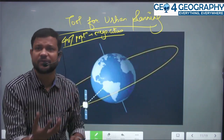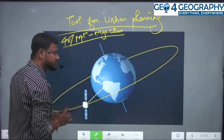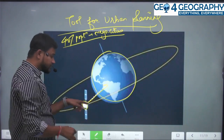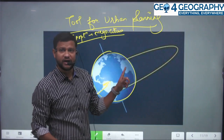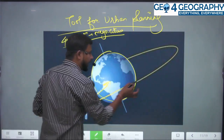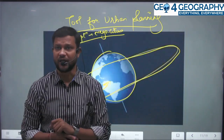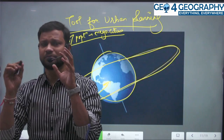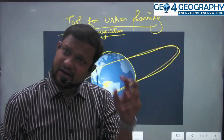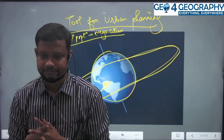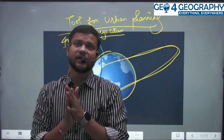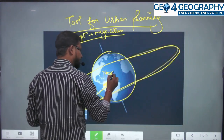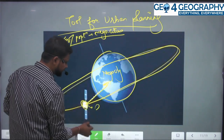You guys are probably aware of this concept, but you should revise it. A satellite is a body that is connected with a core body — like a planet. It orbits around the planet and is connected by a bond between them. That same concept applies to urbanization, where the core planet is like a mega city and the orbiting body is like a satellite town.